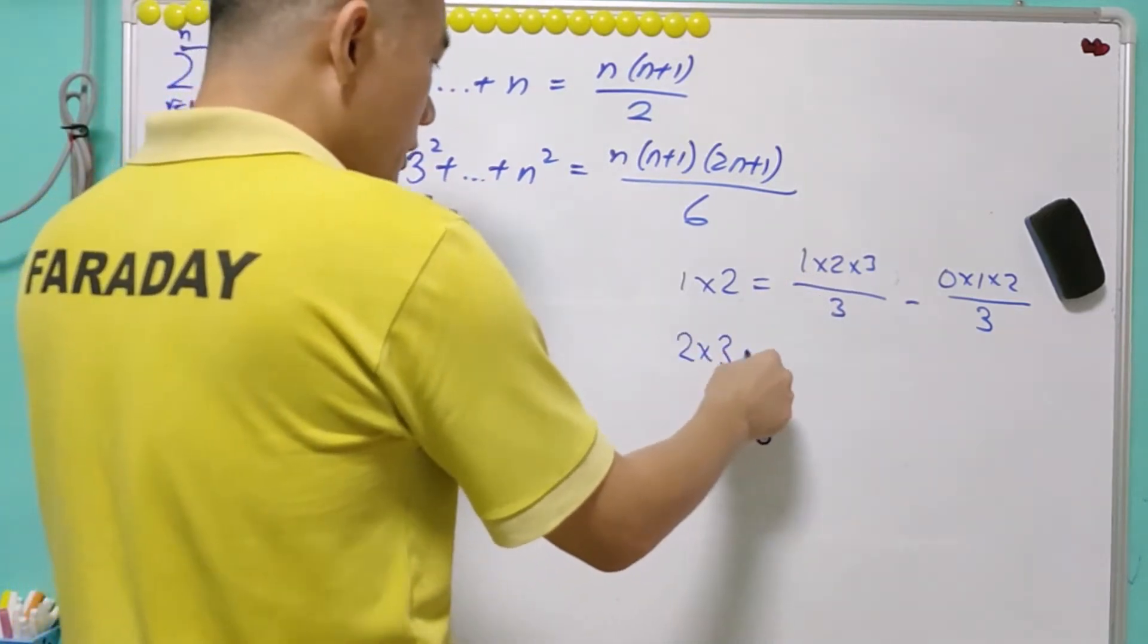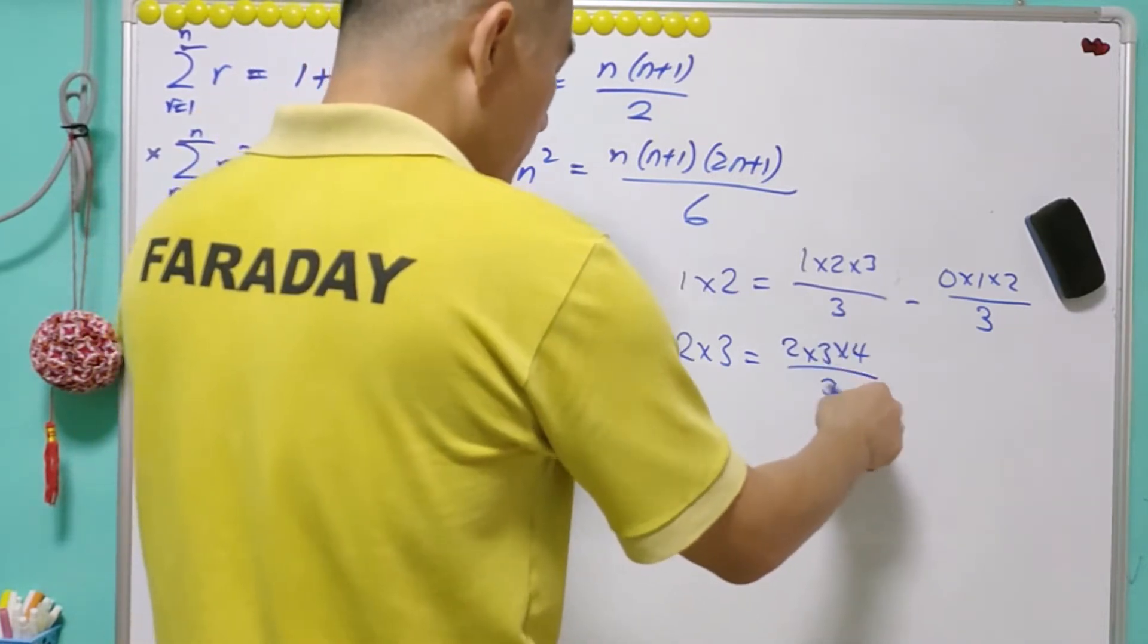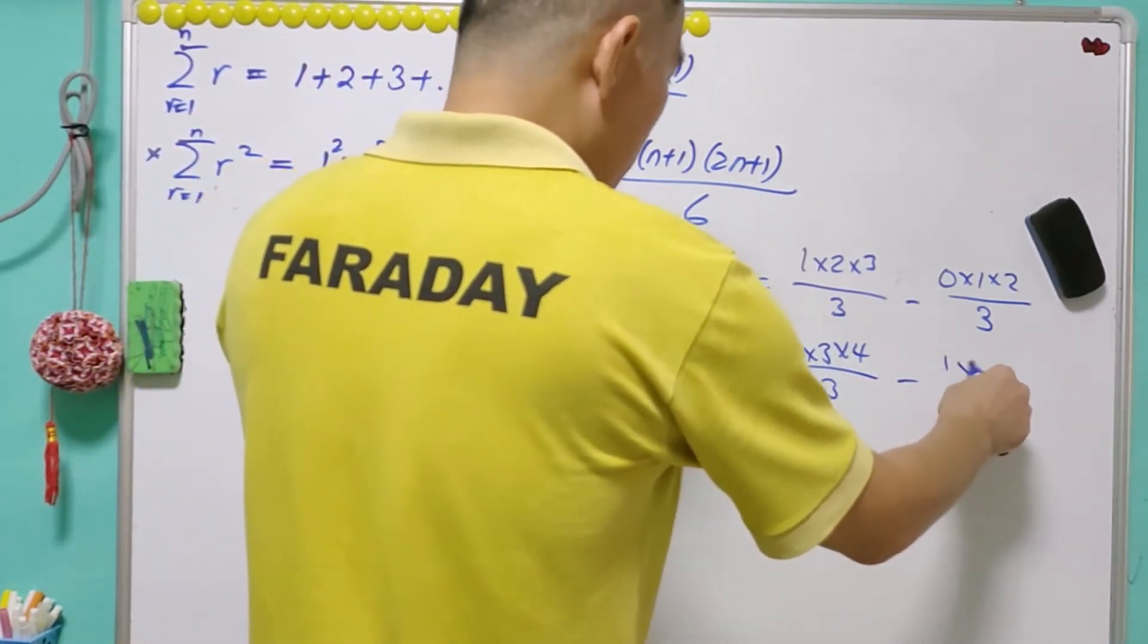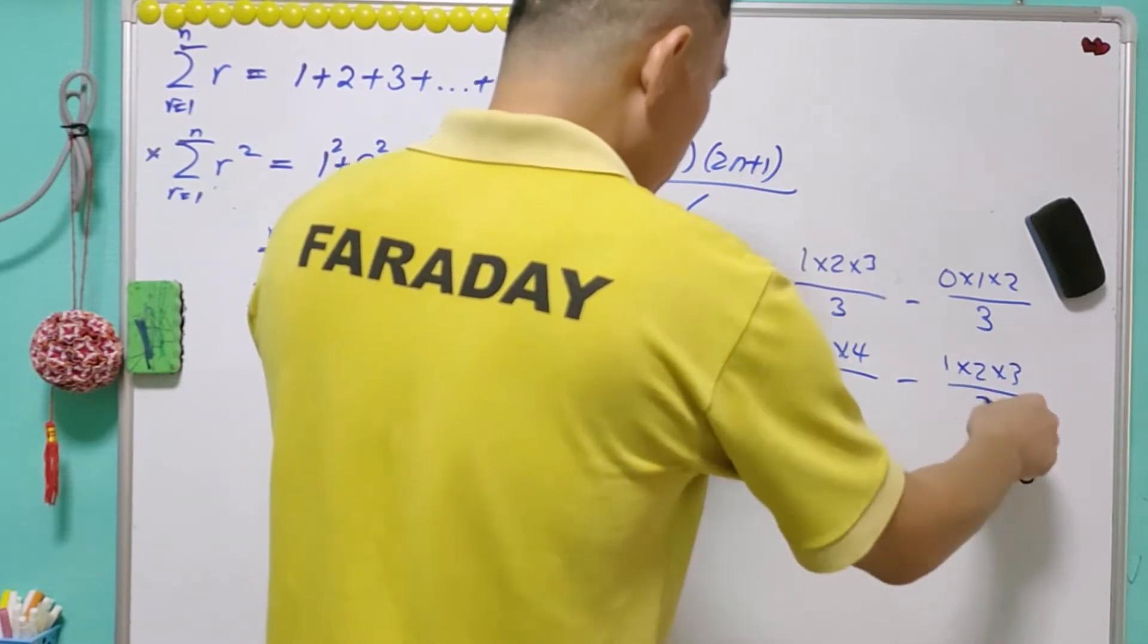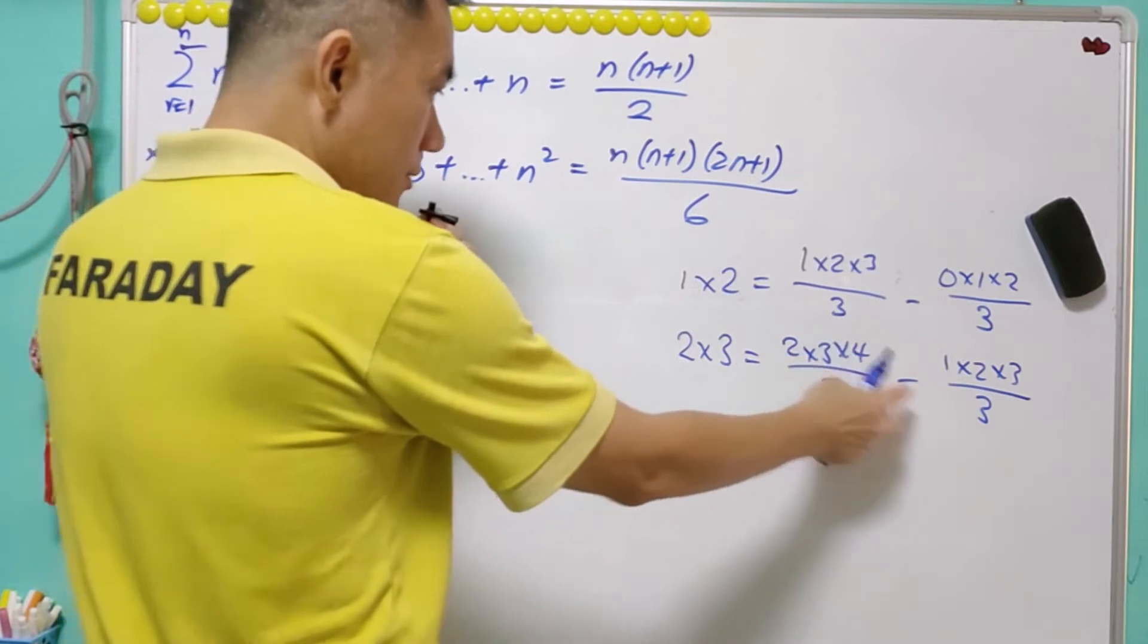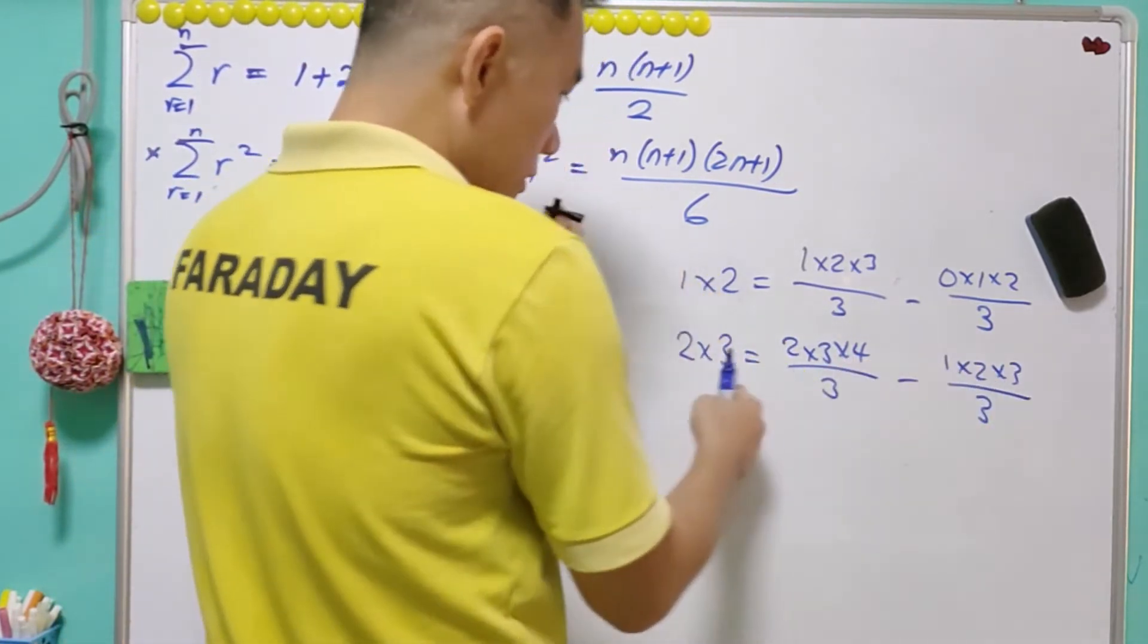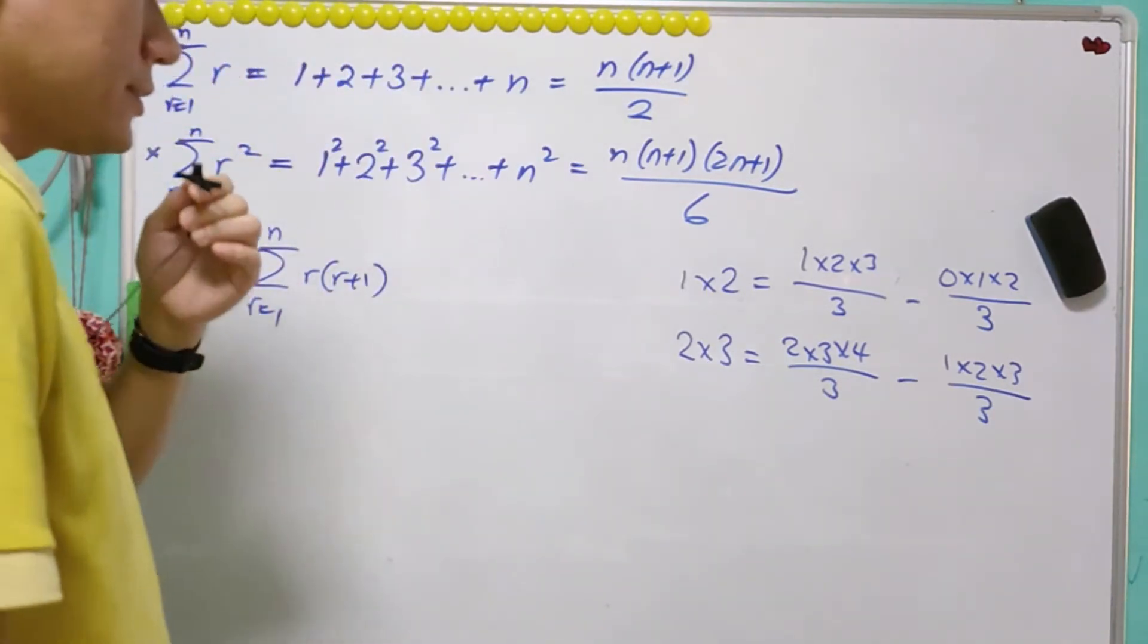And 2×3 is equal to, follow the pattern, 2×3×4 over 3. Then this is 1×2×3 over 3. Let us check. After we cancel the 3, that is 8. And that is equal to 2. So it is a 6. 8 minus 2 is a 6. That's correct.